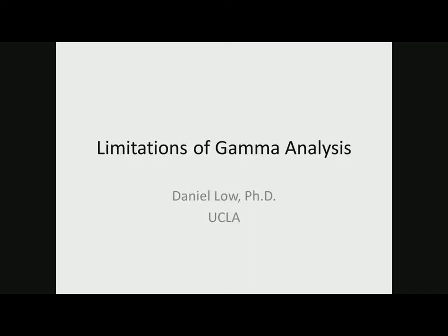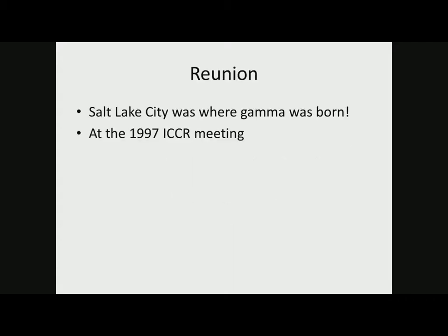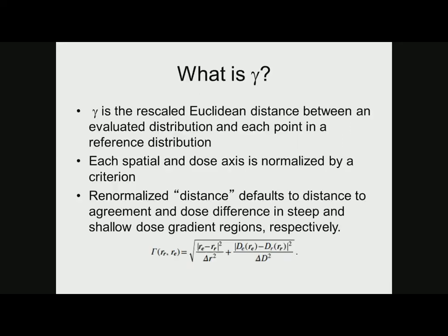Thanks for the opportunity to present this talk on the limitations of gamma. Gamma was invented in Salt Lake City in 1997 at the ICCR meeting in a parking lot. I was describing the problems with dose distribution comparisons, and I asked the question: what if we normalize the axes? That's how it happened.